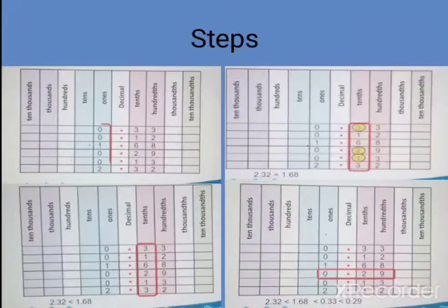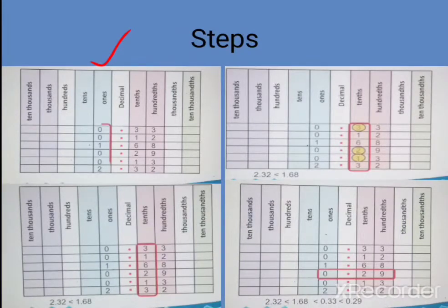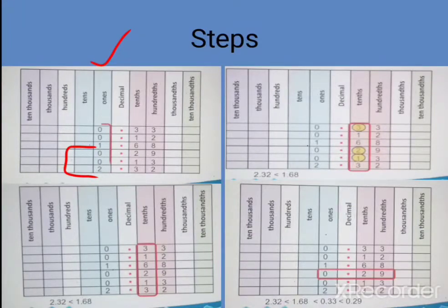Let's see a few more examples. यहाँ आपको कुछ numbers given हैं, आपने उनको compare करना है। आपने सबसे पहले ones place पर जो digit है उसको compare करेंगे। तो आप देख सकते हैं — इन दोनों में one और two हैं, बाकी सब zero है। One और two जो हैं वो इनसे bigger हैं, और one और two में which is greater — it means the last number is सबसे बड़ा है, first number पर आएगा।